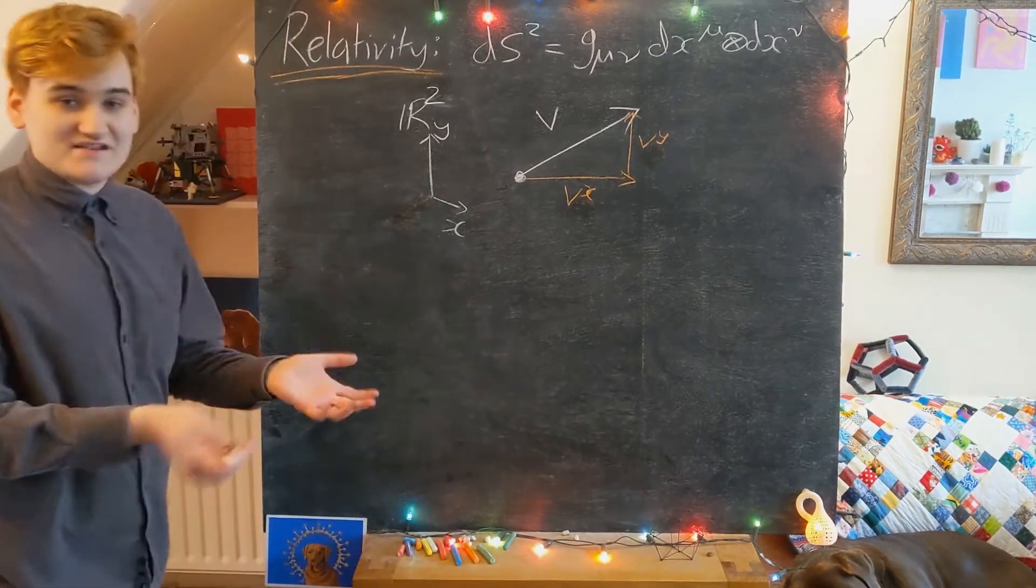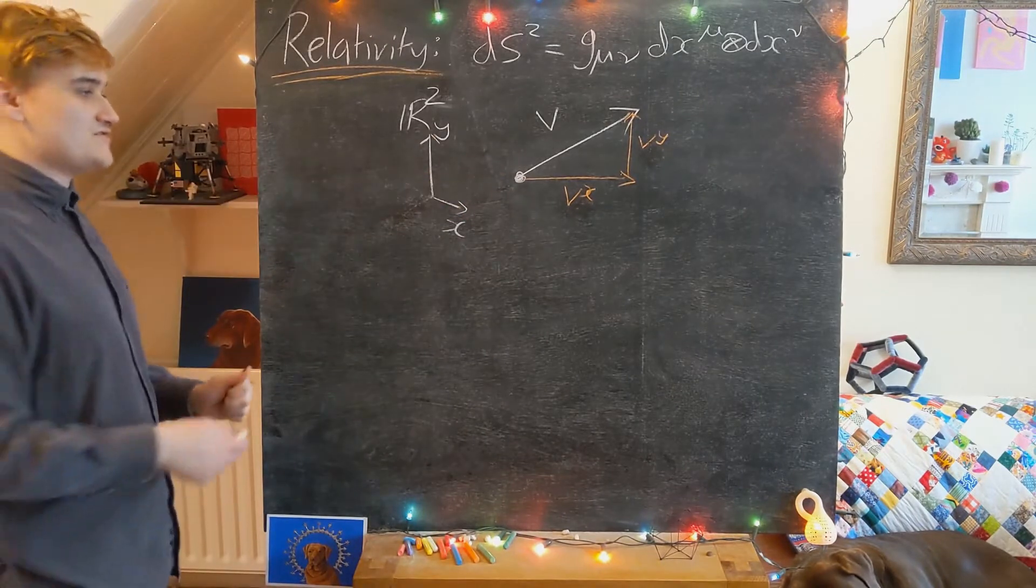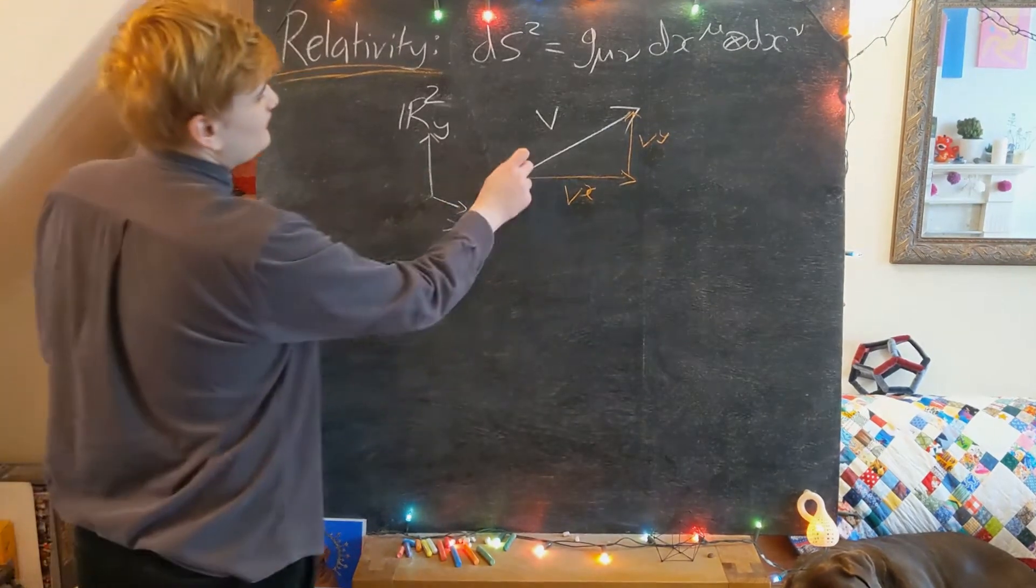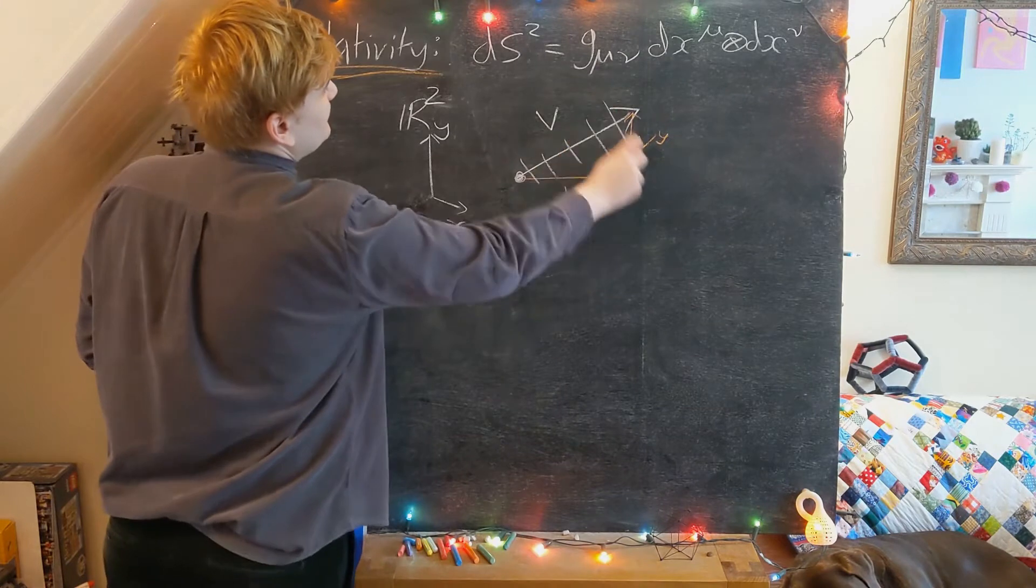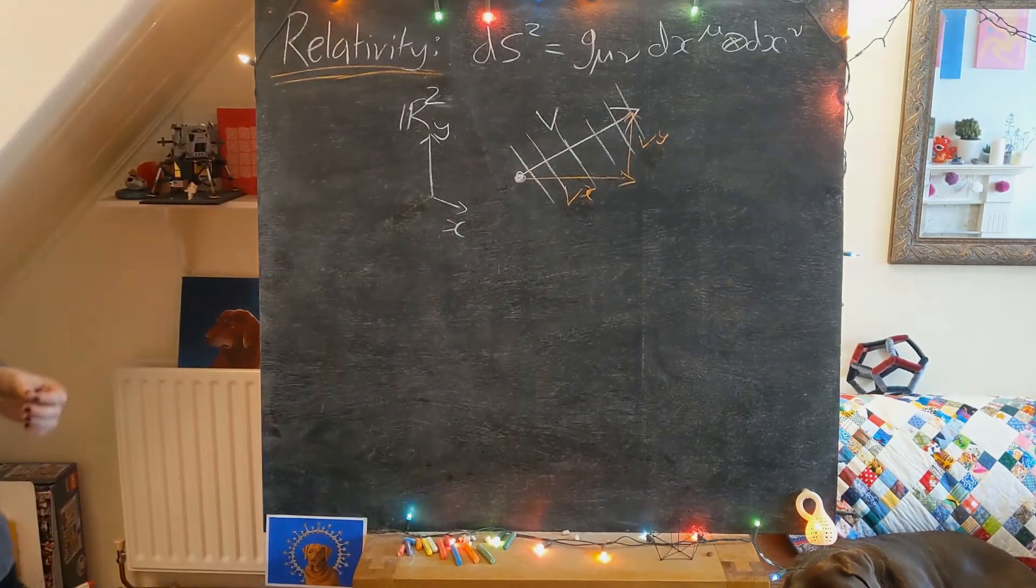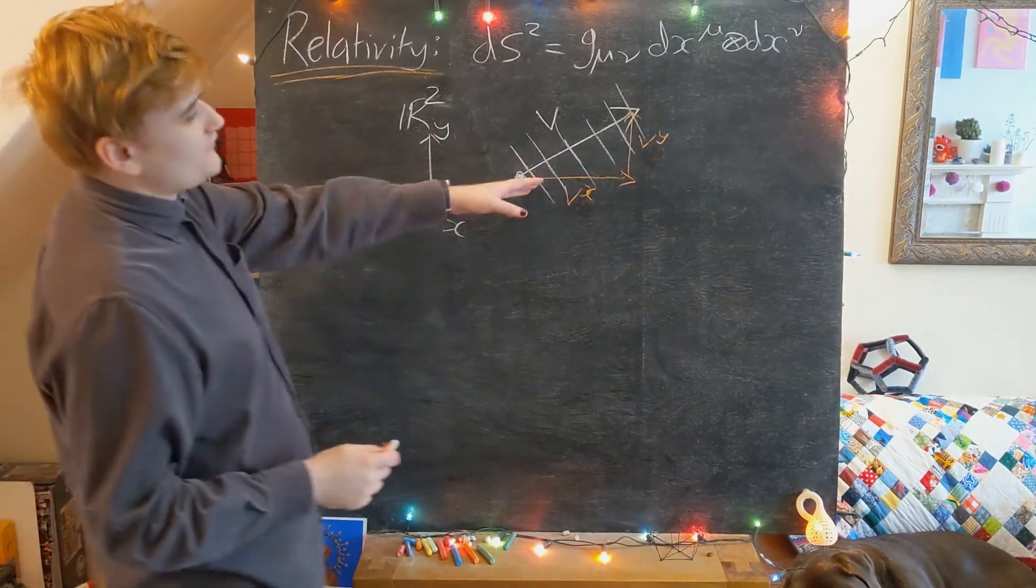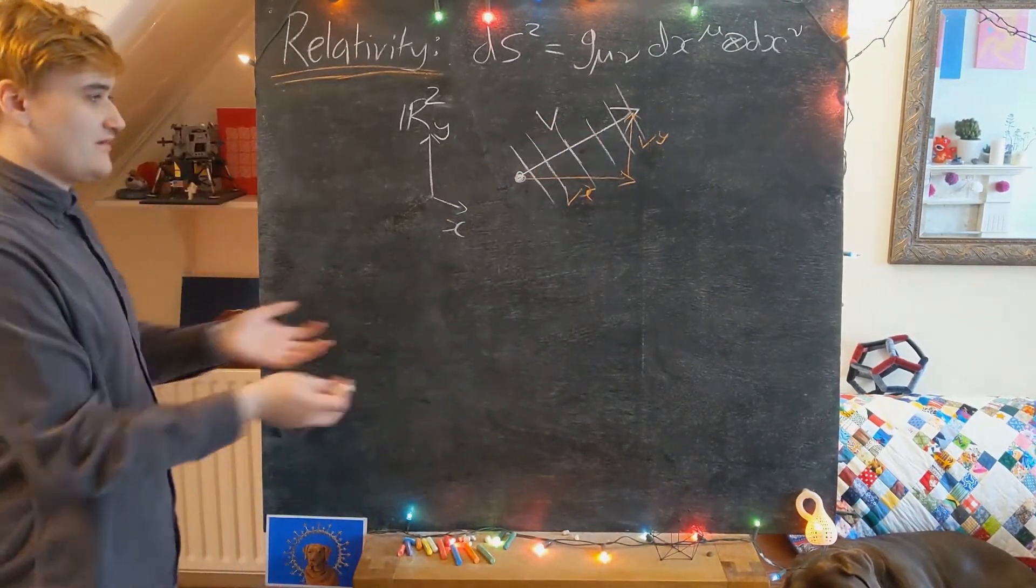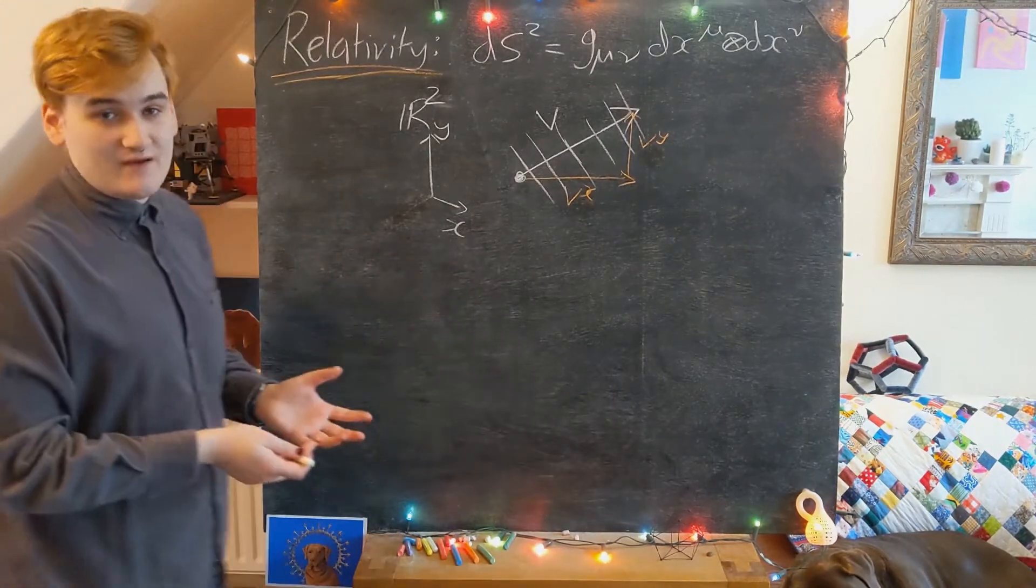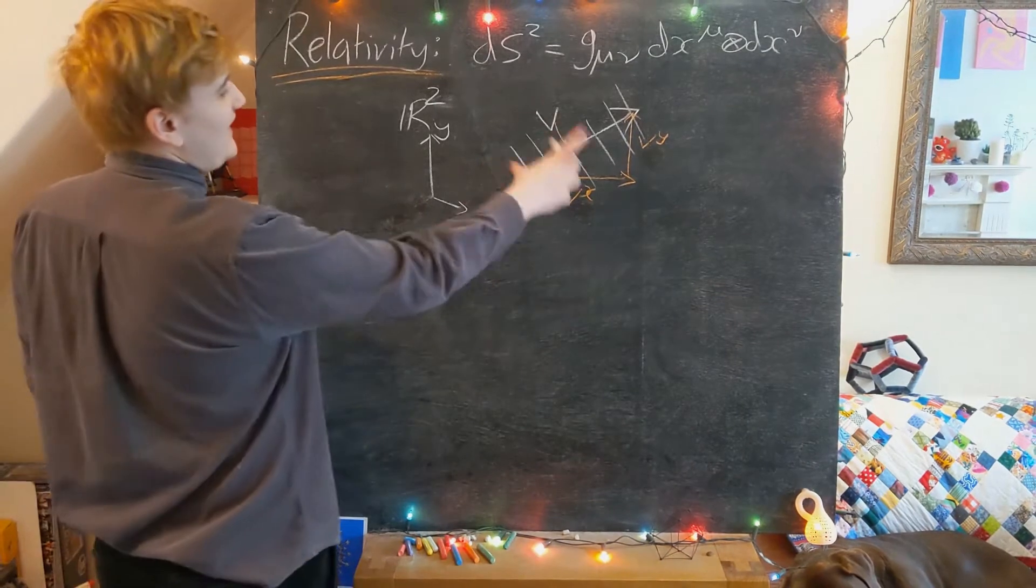And now what we essentially saw is how we can plug this vector into the metric. It's gonna create a kind of one-form that corresponds to that vector, and then that contraction of this one-form with this vector is going to essentially produce a real number. And that real number we can associate with the length of this vector.